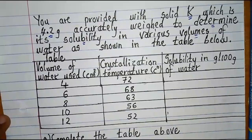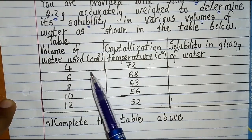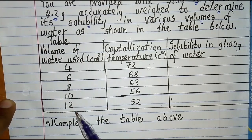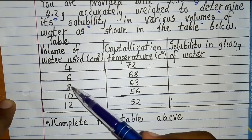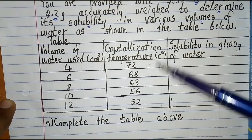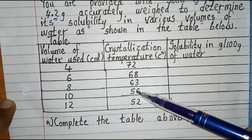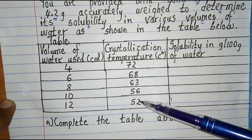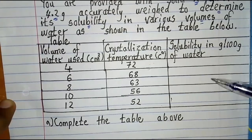We have various volumes of water used. In the first case we have 4 cubic centimeters of distilled water, then 6, 8, and so on up to 12 cubic centimeters, with an additional 2 cubic centimeters each time. We also have a column for crystallization temperature in degrees Celsius, ranging from 72 down to 52. You realize that as volume of water increases, the crystallization temperature decreases from 72 to 52.